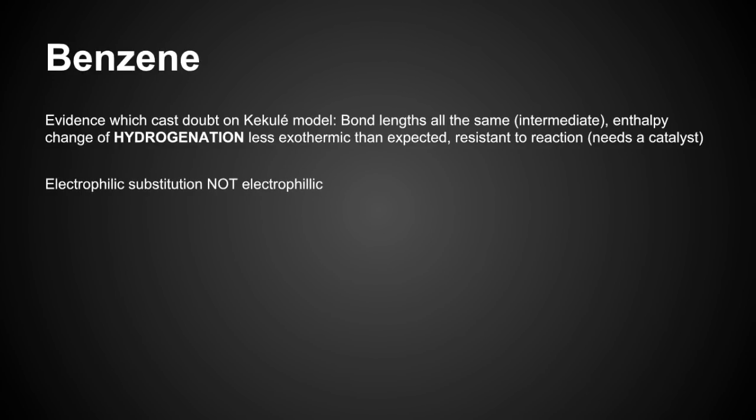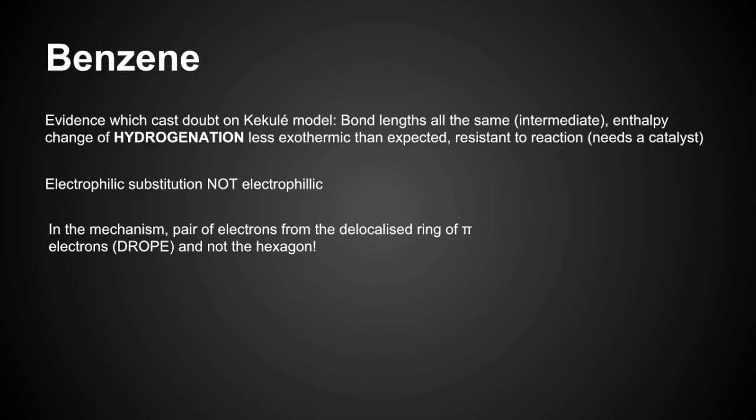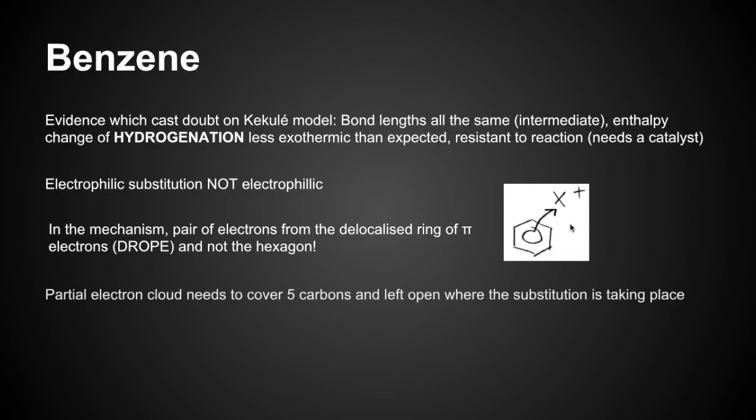Next, it undergoes electrophilic substitution, not electrophililic, which is a very common spelling mistake. When you're doing the mechanism for electrophilic substitution, you need to take your pair of electrons from the delocalised ring of pi electrons. The DROPE acronym is very handy there. You take the pair of electrons from the delocalised ring of pi electrons, not the hexagon. It's got to come from the circle, not the bond.